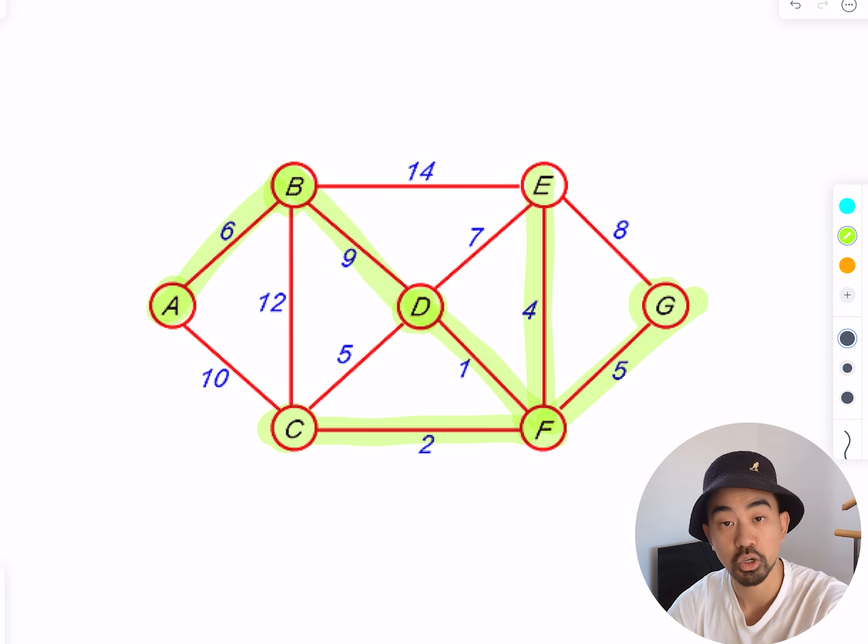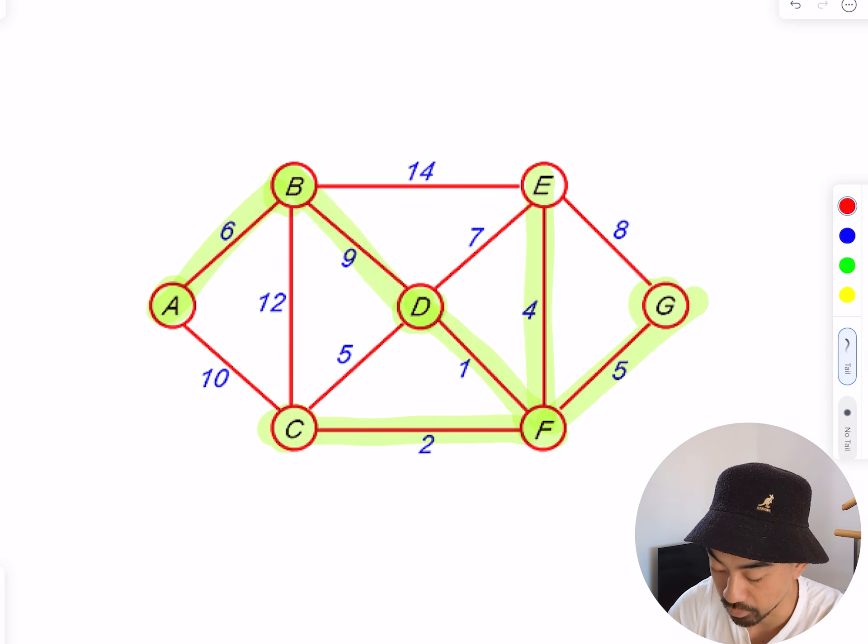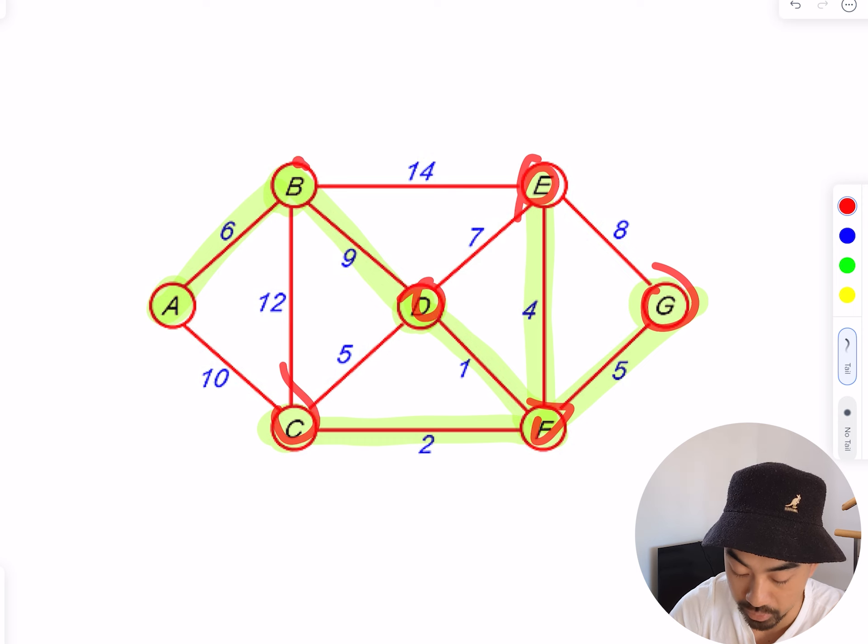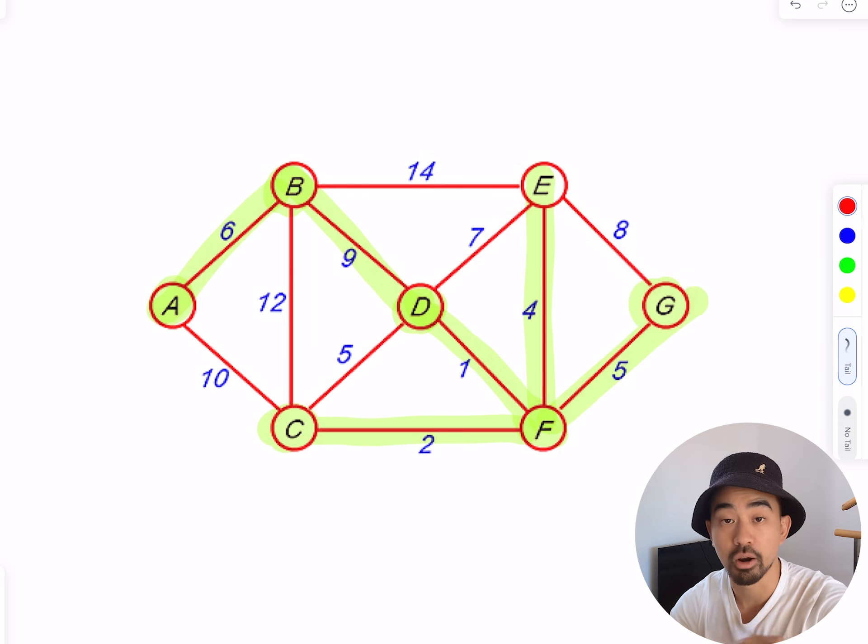And then that's it. Make sure all your vertices are connected—G, E, F, D, C, B, and A—and finally there are no loops. If you need to find the weight of the minimum spanning tree, just add up all the numbers you've highlighted. That was a super quick lesson. If you have any questions, let me know in the comments below. Thanks for watching and I'll see you in the next one.